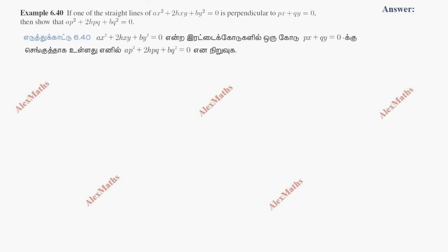Hi students, this is Alex here. Example 6.40: If one of the straight lines of ax² plus 2hxy plus by² equal to 0 is perpendicular to px plus qy equal to 0, show that ap² plus 2hpq plus bq² equal to 0.